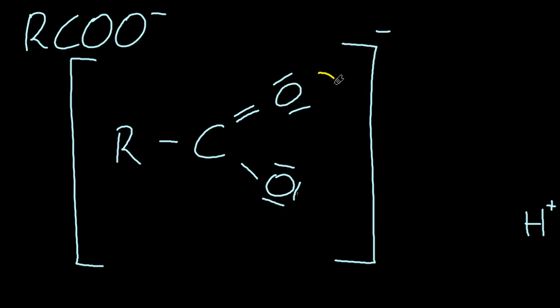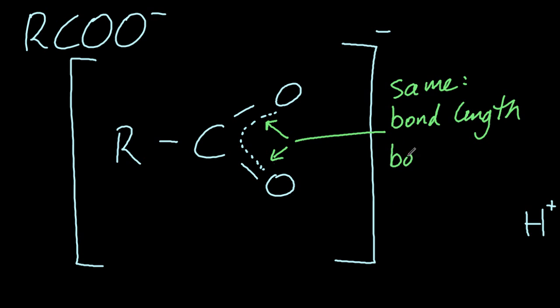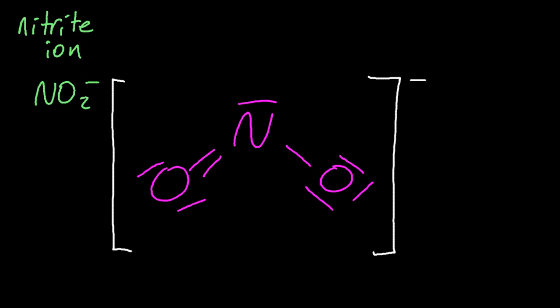So if the truth is in between those two extreme structures, how do you show it? Well, let's erase all of those lone pairs and just draw a dotted line. And so that's really a one-and-a-half bond. They have the same lengths and the same strengths as each other. It's not a single and a double. Why do things resonate? Well, it gives them a lower energy, makes them more stable.